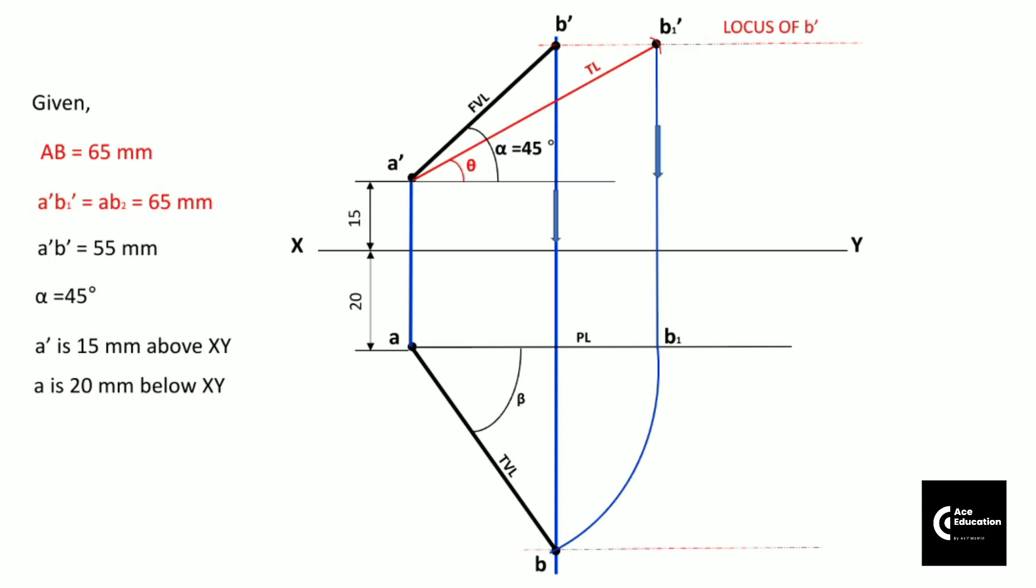Now you can draw the locus of point B, which is passing through point B itself, where you can mark the true length. But how to mark true length? You have been given distance 65 mm AB₂. So this distance AB₂ 65, you will keep this distance in compass and from point A as the center cut an arc on this locus of B.